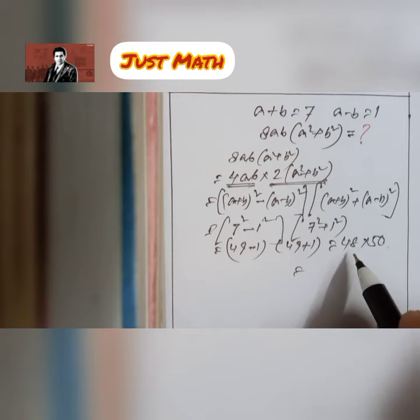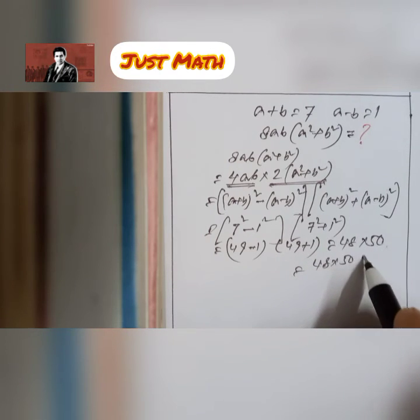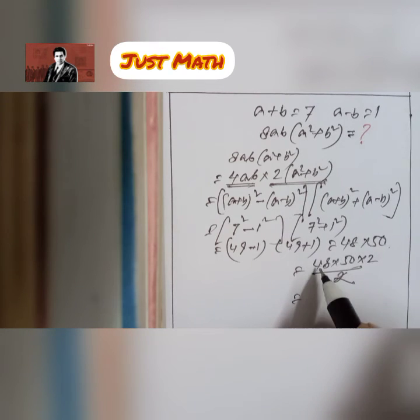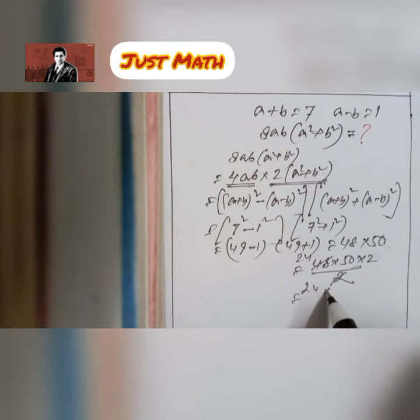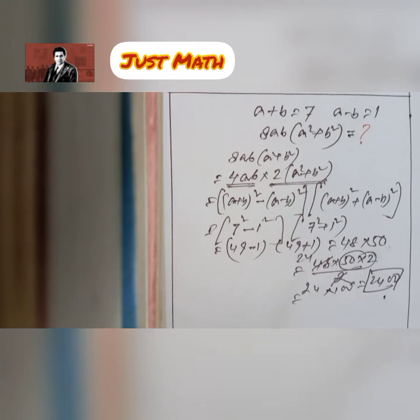Now how to multiply 48 and 50 very easily. You multiply it by 2 and divide it by 2. 48 by 2 is 24. 24 multiply 50 is 200. 2400. The final answer. Thank you very much.